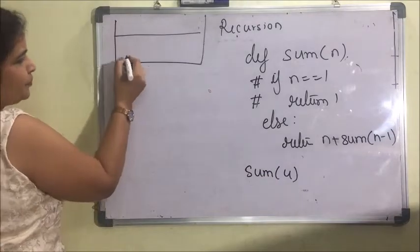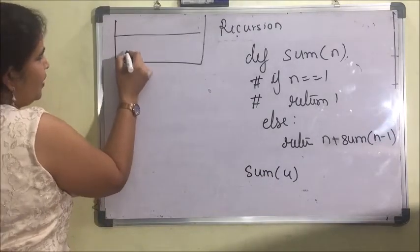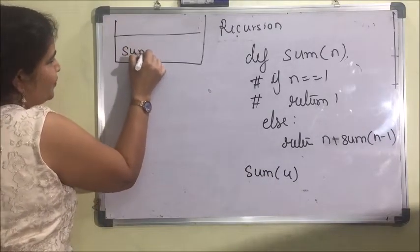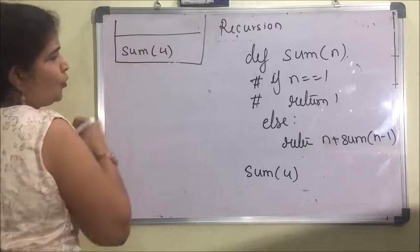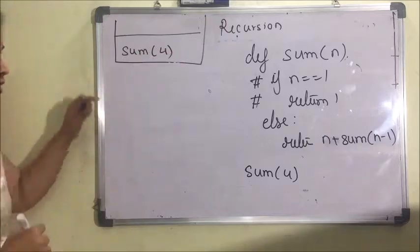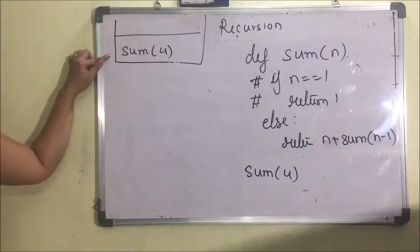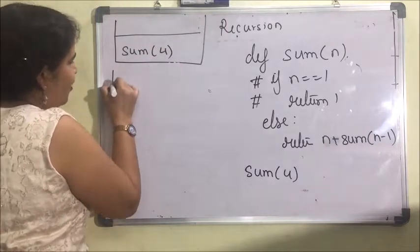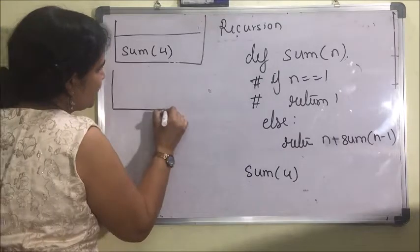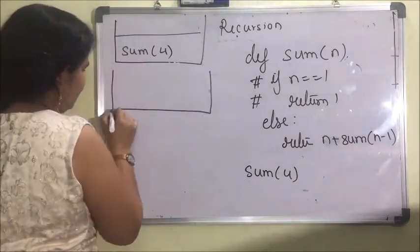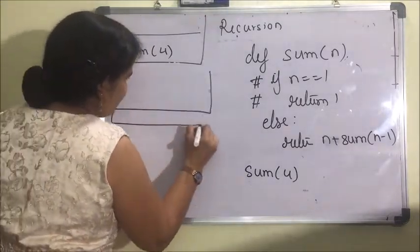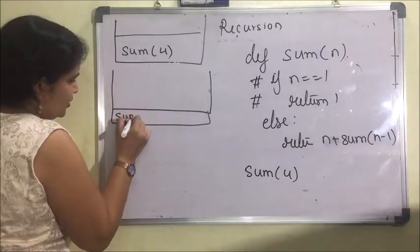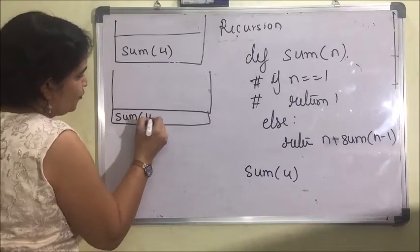Suppose I have called sum(4). This is the calling of the recursive function. Now, sum(4).